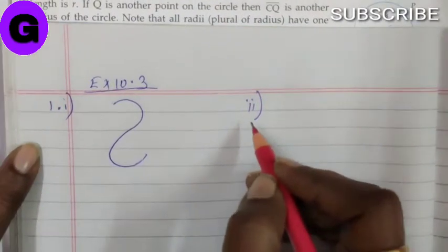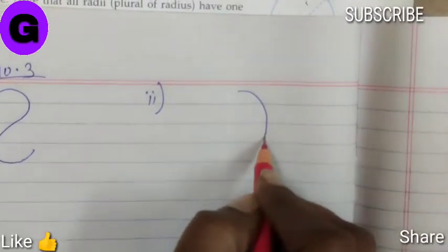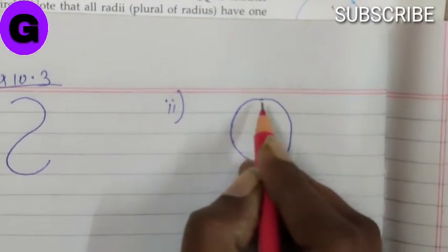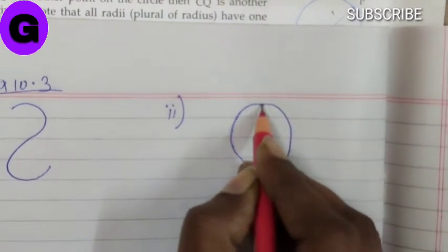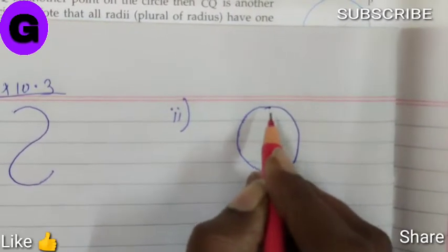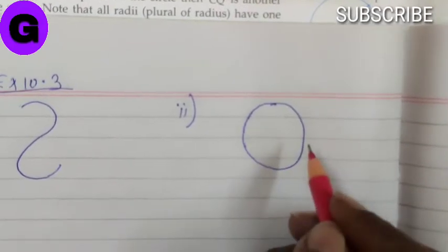Number 2, closed simple curve. Now this is closed simple curve. Why closed? Because the starting point finally meets with the ending point. Hence it is closed. And why it is simple? Because it is not crossing each other.